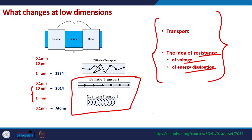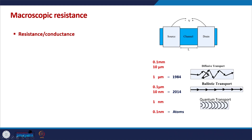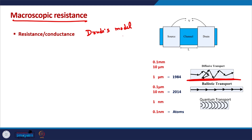To understand these changes we need to contrast the idea of resistance at the diffusive transport level to the idea of resistance at the ballistic transport level. The idea of macroscopic resistance or resistance in diffusive transport is largely due to Drude's model of electrical conductivity — Drude's model of electrical conduction.